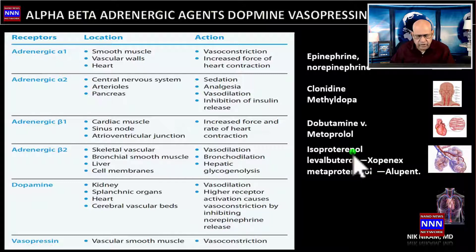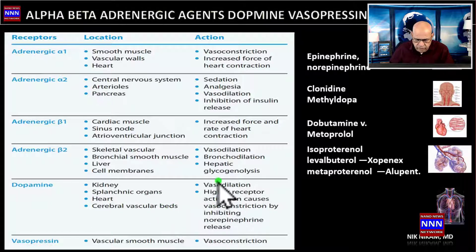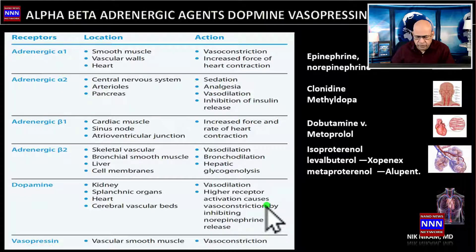Getting back to isoproterenol — it is a drug used for increasing heart rate in patients with severe bradycardia. Dopamine acts on the vascular system in the kidneys, splanchnic organs, heart, and cerebral vascular beds. In low doses it causes vasodilatation, improves renal perfusion, improves urine output, and maintains blood pressure.